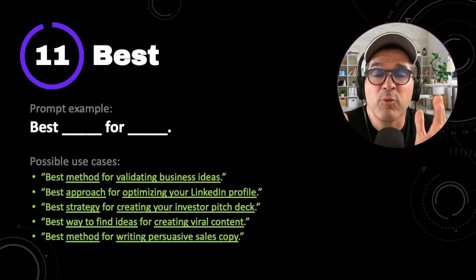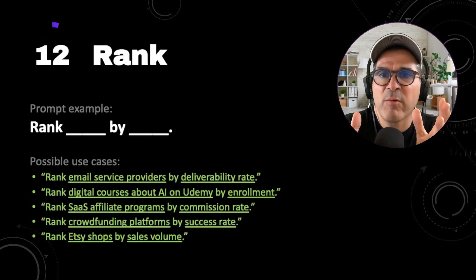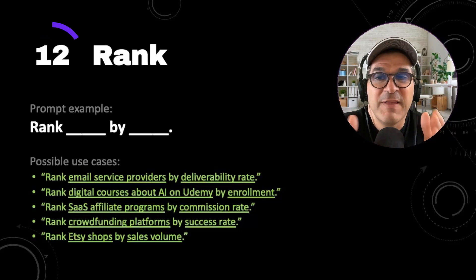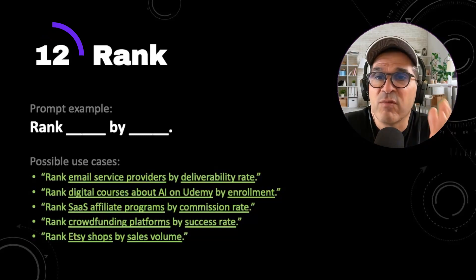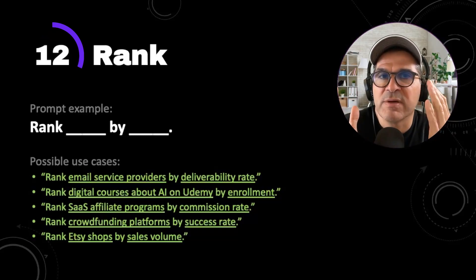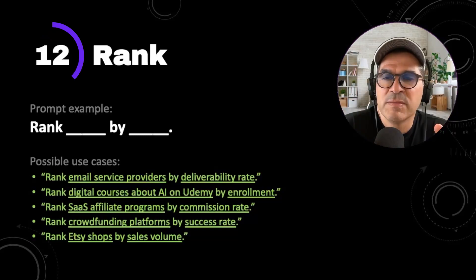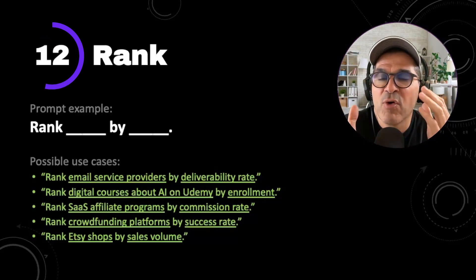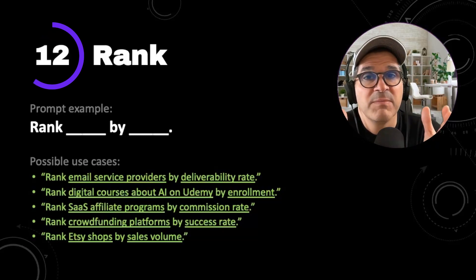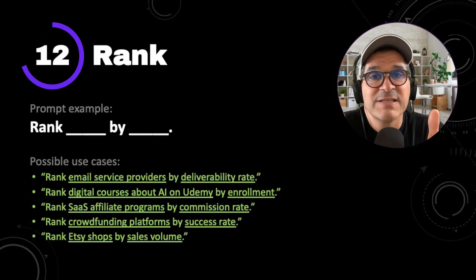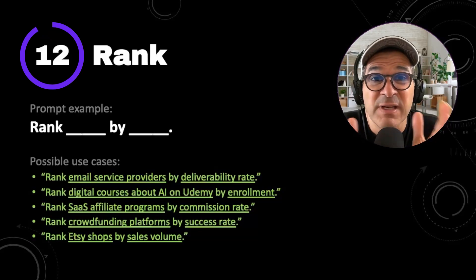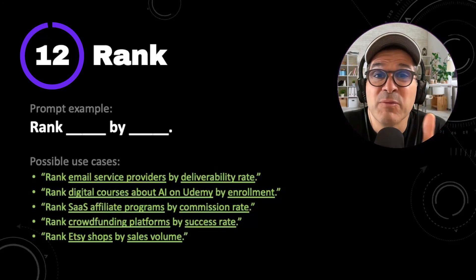That leads me to power prompt number 12: rank. Sometimes you need a list of the best, and in that case you want to use rank. The prompt example is rank blank by blank — rank thing by quantity. Some possible use cases: rank email service providers by deliverability rate, rank SaaS affiliate programs by commission rate, rank crowdfunding platforms by success rate, or rank Etsy shops by sales volume. Rank is another powerful prompt in your arsenal that ChatGPT absolutely loves — play around with this one and see what kind of results you can get.